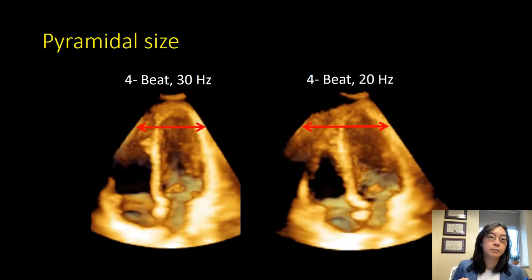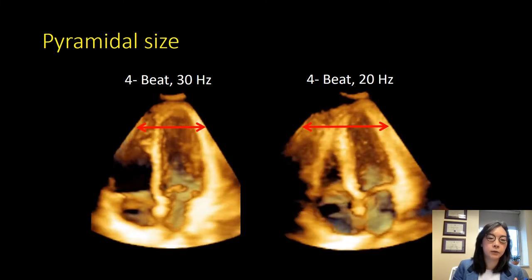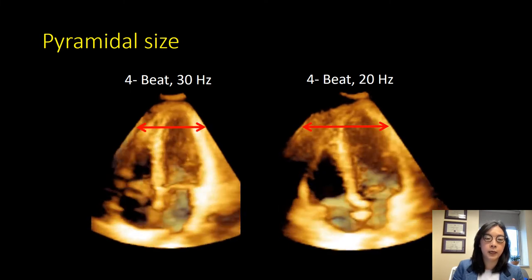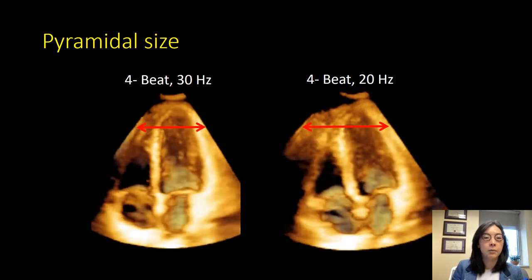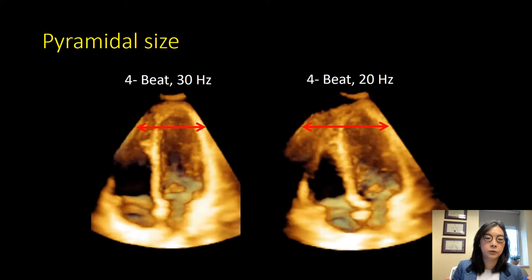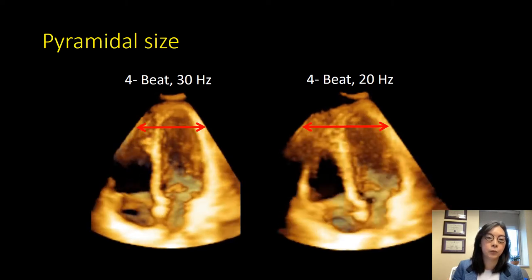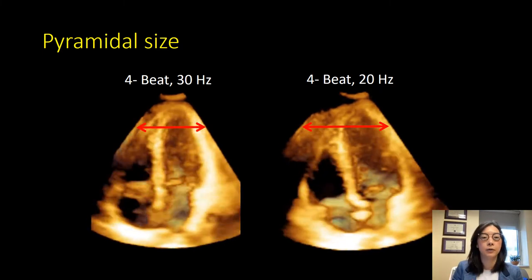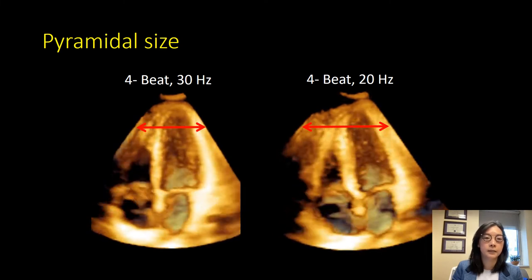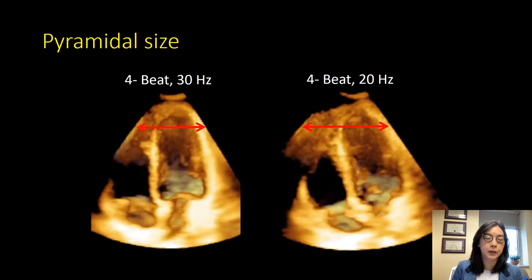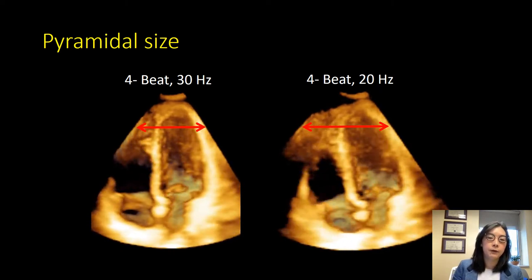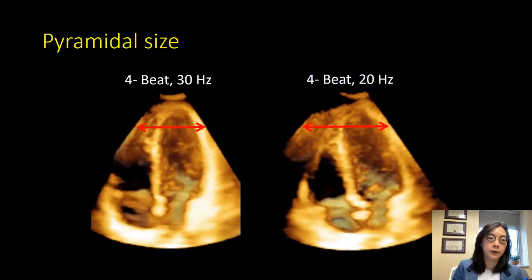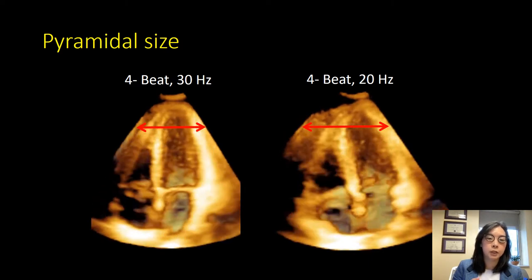Why does pyramid size matter? It matters for two reasons. First, if you're doing volumetric measurements you want to capture both the largest and smallest volumes in the data set to create an accurate ejection fraction. Most vendors gate using ECG and the QRS complex, so end-diastole is usually captured on the 3D data set. However, if you have a low volume rate you may miss end-systole, causing you to overestimate systolic volumes and underestimate ejection fraction. Also, with a small fast-moving structure, a low volume rate data set may cause you to miss it, so you want a higher volume rate to avoid missing fast-moving structures like vegetations or masses.